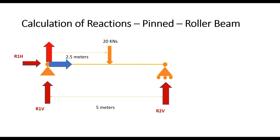The reactions are arranged to align in their positive direction, along the positive direction of the global axis system. Applying the first equation of equilibrium, summation of Fx equal to 0: since the applied load is only vertical with no horizontal load, the horizontal reaction at node 1, R1H, would be 0.